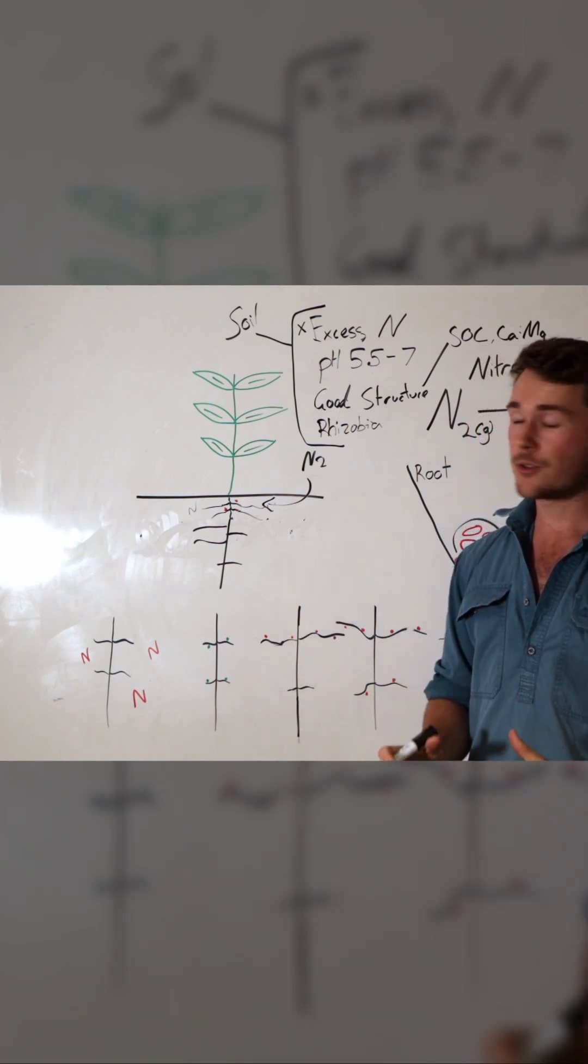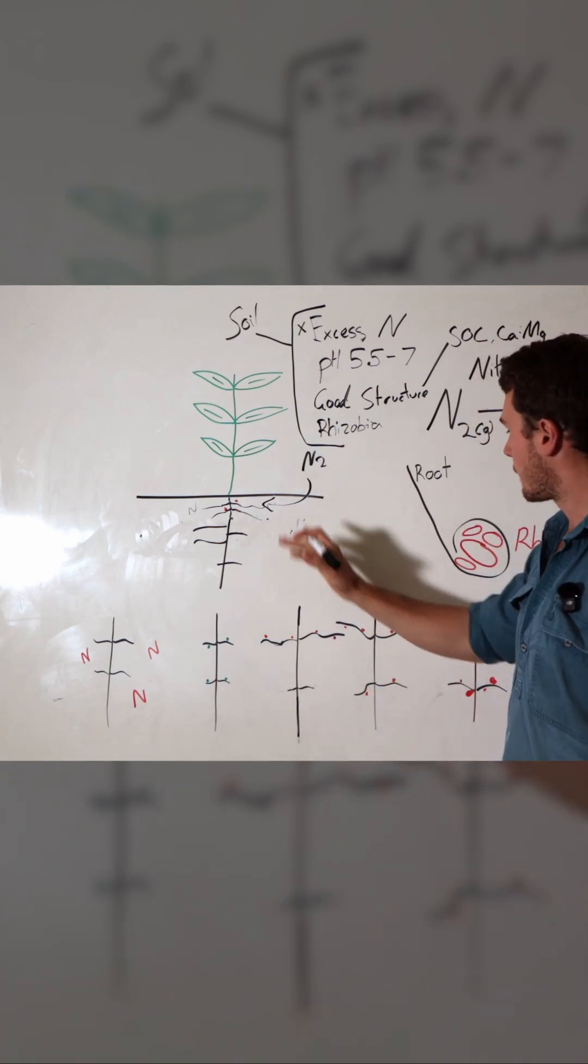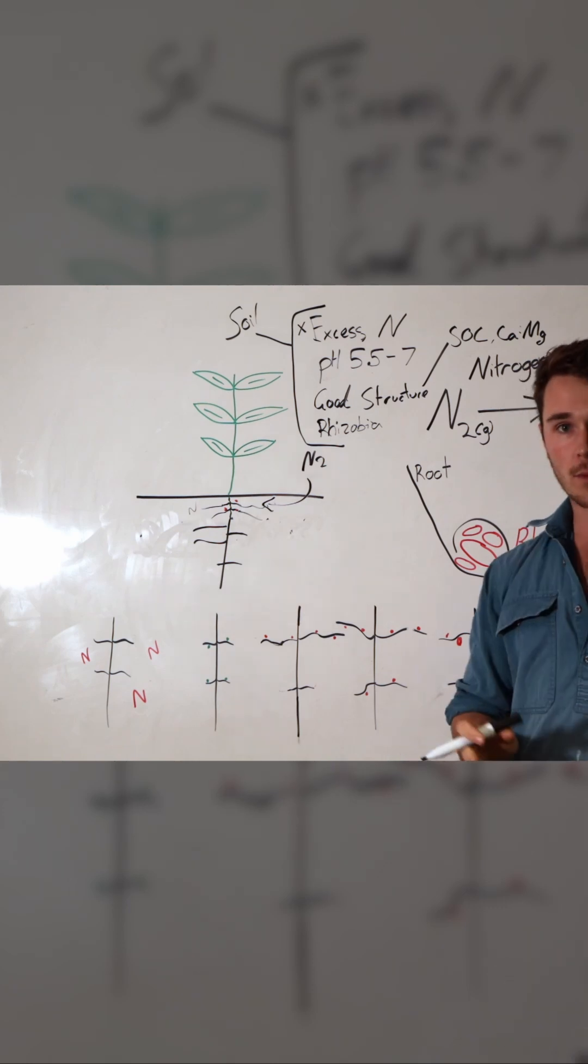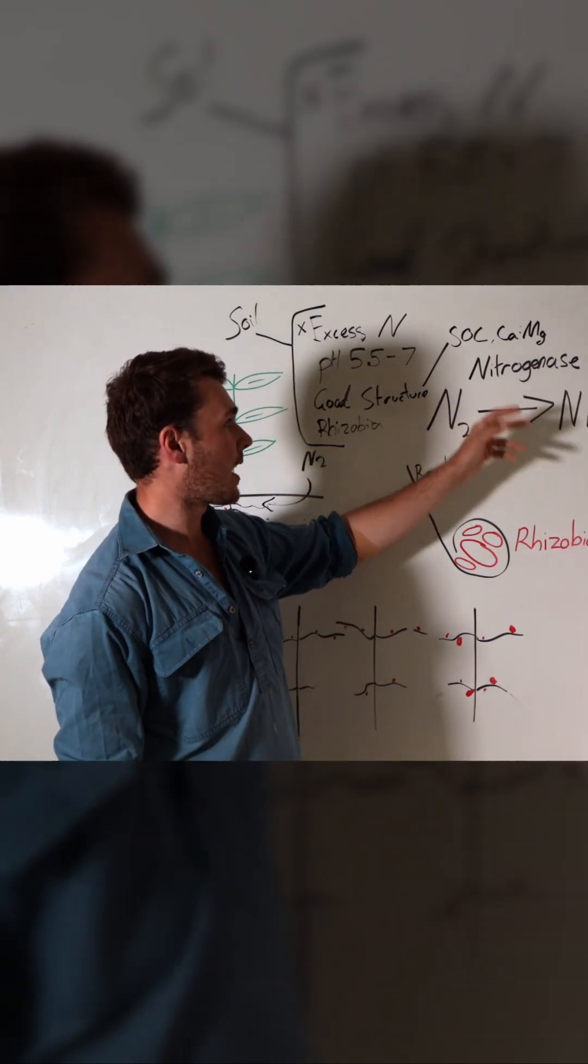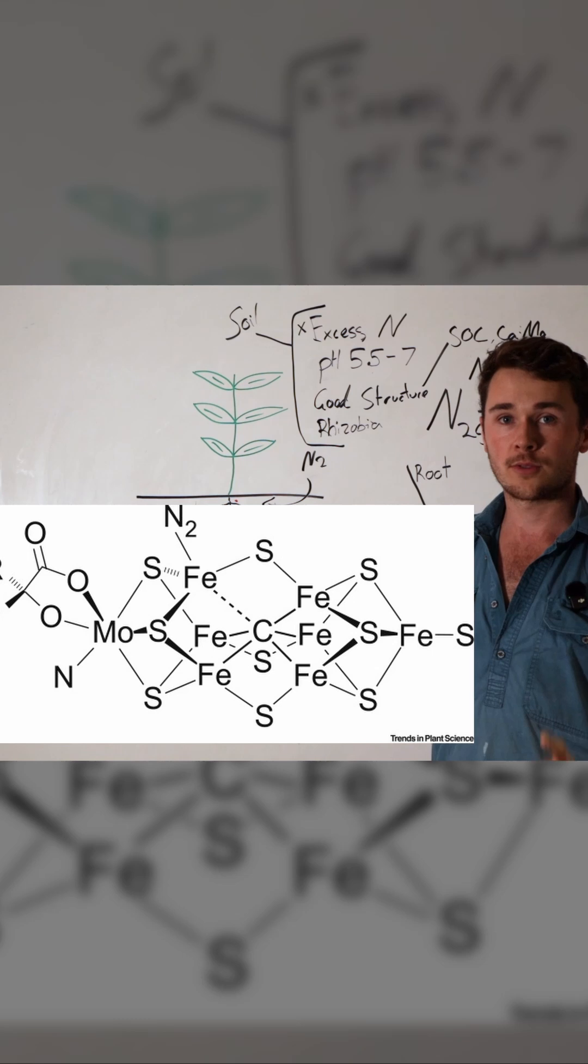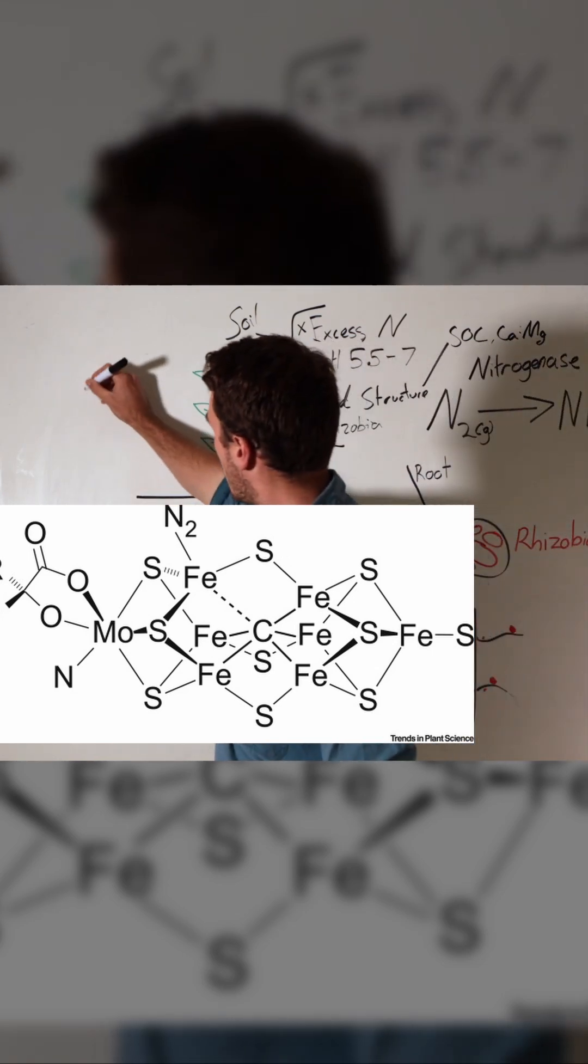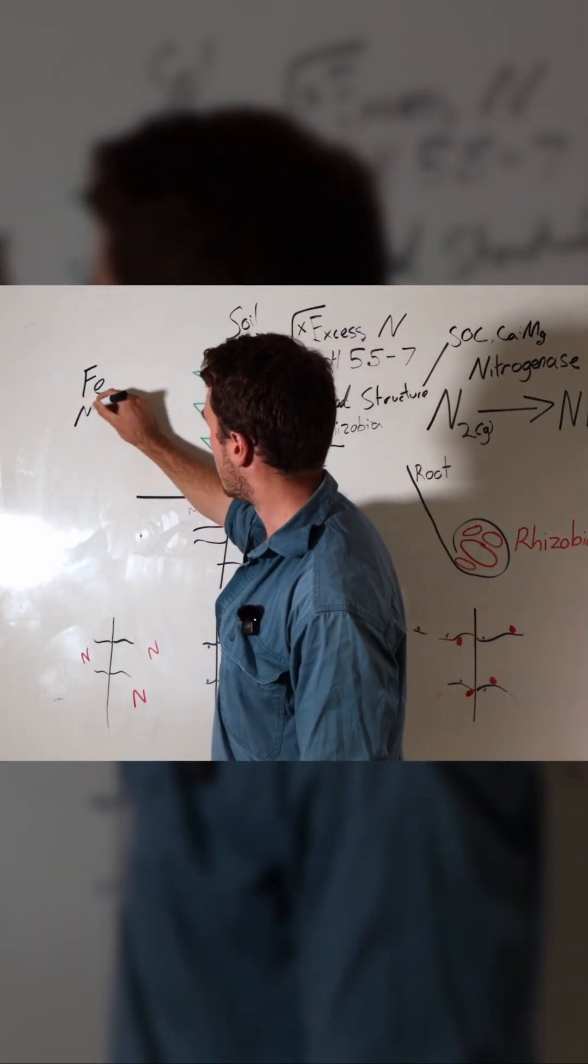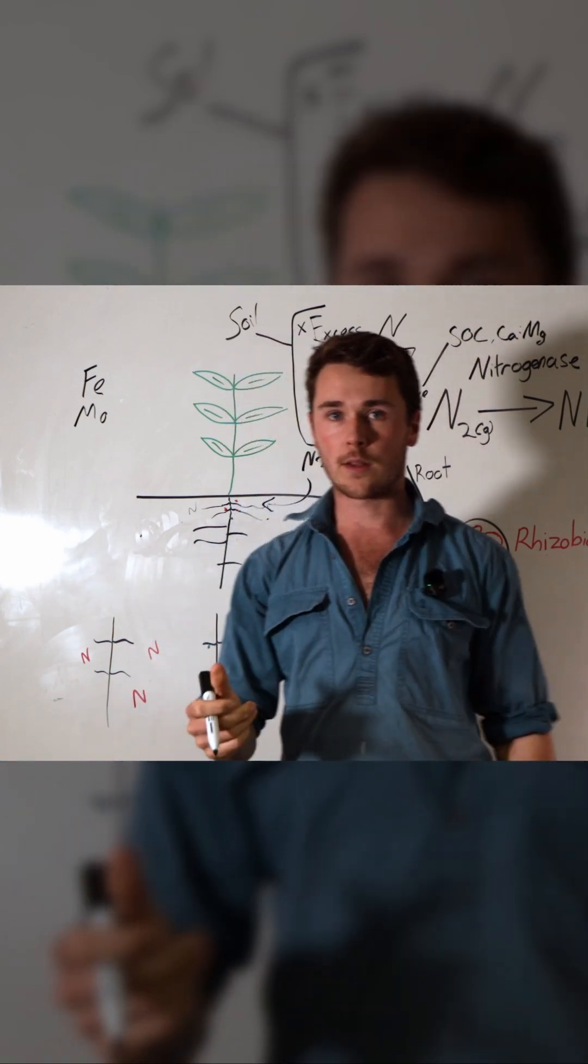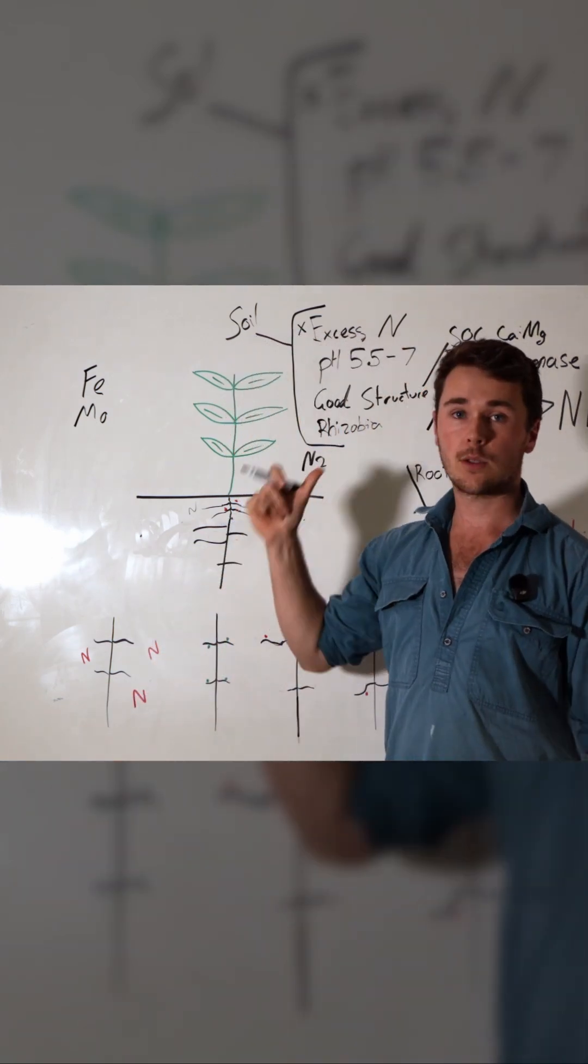There are a few critical nutrients required for nitrogen fixation. The very first ones are needed in the nitrogenase enzyme. There are two minerals that are really important: iron and molybdenum. Both of these are required as enzyme cofactors for the nitrogenase enzyme.